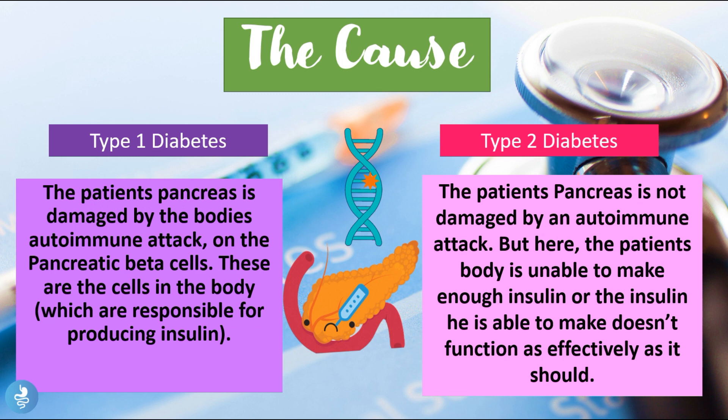In type 2 diabetes the pancreas is not damaged by an autoimmune attack, but here the patient's body is unable to make enough insulin, or the insulin produced doesn't function as effectively as it should. So the patient does produce insulin but may not produce enough, or may produce insulin that doesn't function effectively. In both cases we'll have increased blood sugar levels, but the main difference is the lack of response to insulin.